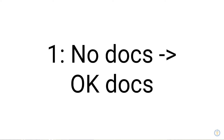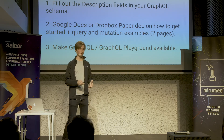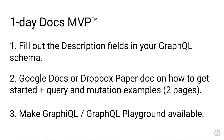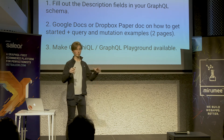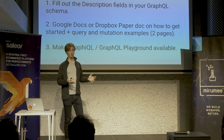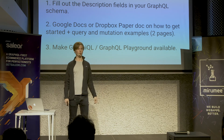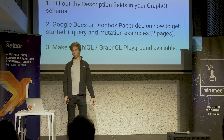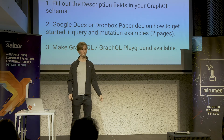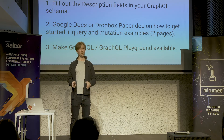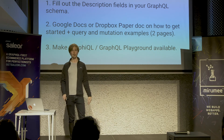For different cases you need to do different things. If you have no documentation at all, you want to get to OK docs first, and there's a very simple thing you can do. You don't need to over-engineer stuff — you can just create a Google doc or a Dropbox paper document. I actually really like Dropbox paper because it lets you write markdown nicely and put code examples in. You just publish that. You don't need a documentation site — you just need something for people to look at. You can also fill out the descriptions in the schema so people can still understand what things are for when looking at auto-generated docs. And if you can make GraphiQL or the GraphQL playground available so people can interactively play with your API, even better. You can basically do this in one day.